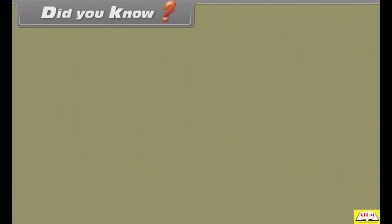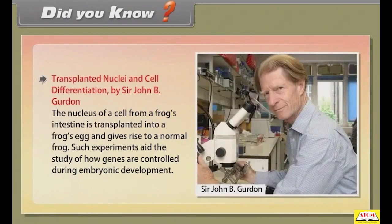Did you know? Transplanted nuclei and cell differentiation — by Sir John B. Gurdon. The nucleus of a cell from a frog's intestine is transplanted into a frog's egg and gives rise to a normal frog. Such experiments aid the study of how genes are controlled during embryonic development.